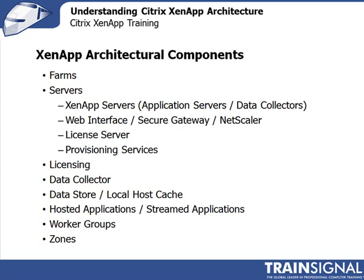You have hosted applications — installed on a XenApp server, published to users — and streamed applications, which are packaged and delivered to the endpoint device and run on the endpoint's operating system without being installed. The key difference: a hosted application consumes resources on the server hosting it, whereas a streamed application is packaged and delivered to the endpoint, consuming that device's CPU, memory, and disk resources.